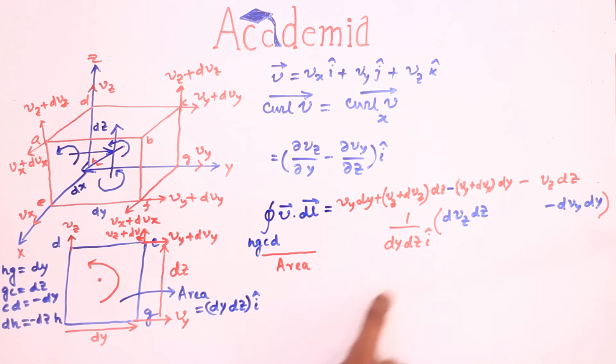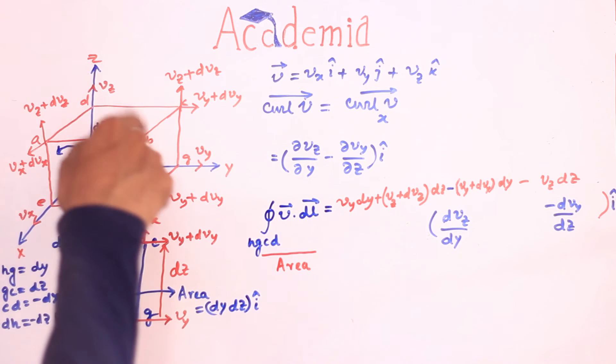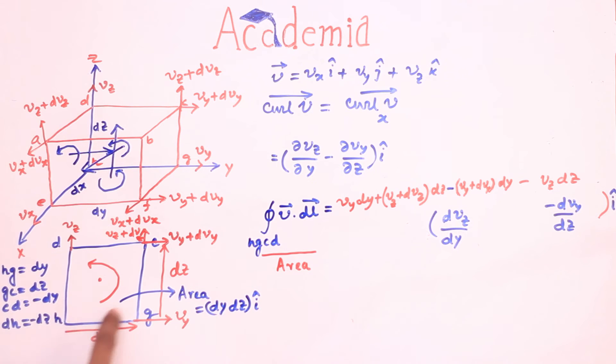Here dz and dz cancel out, dy and dy cancel out. Since this is infinitesimally small volume, so one phase of this small volume will also be an infinitesimally small area del s enclosed by a line hgcd where del s tends to 0.